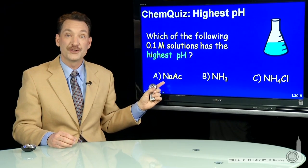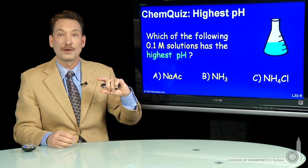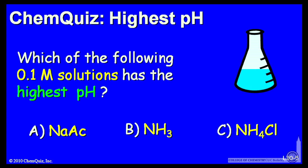0.1 molar sodium acetate, 0.1 molar ammonia, or 0.1 molar ammonium chloride. Think about that for a minute and make a selection.